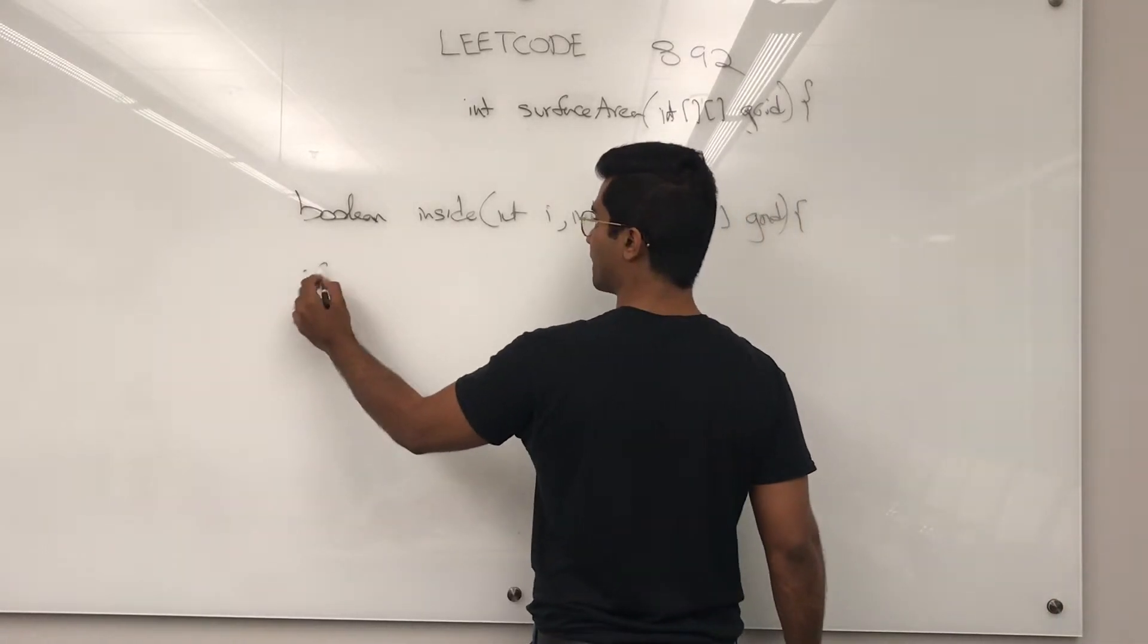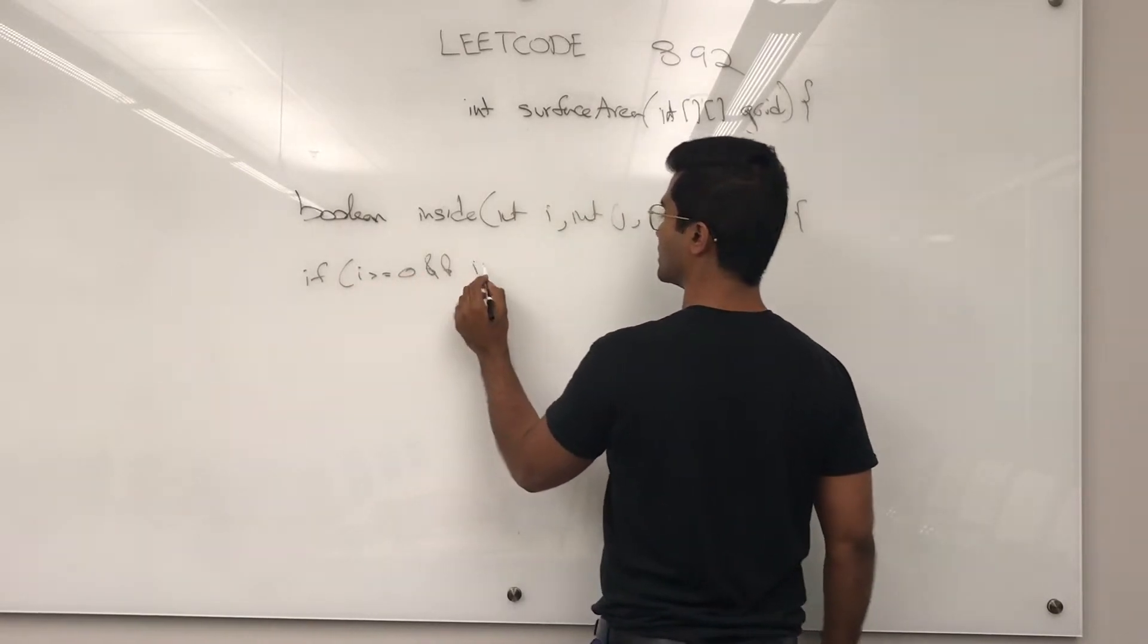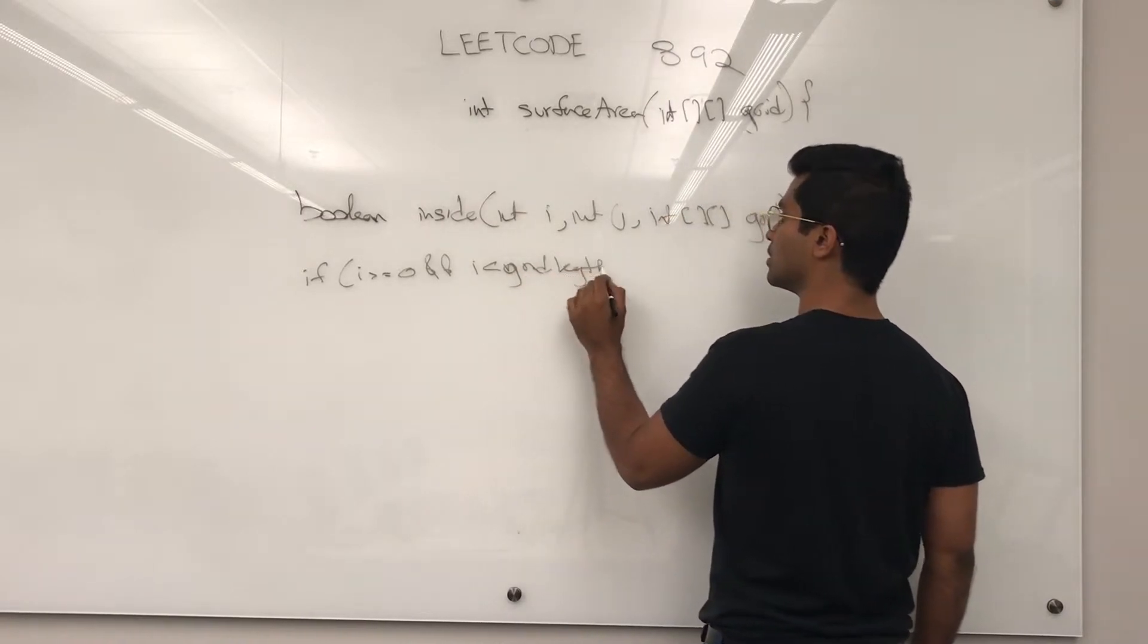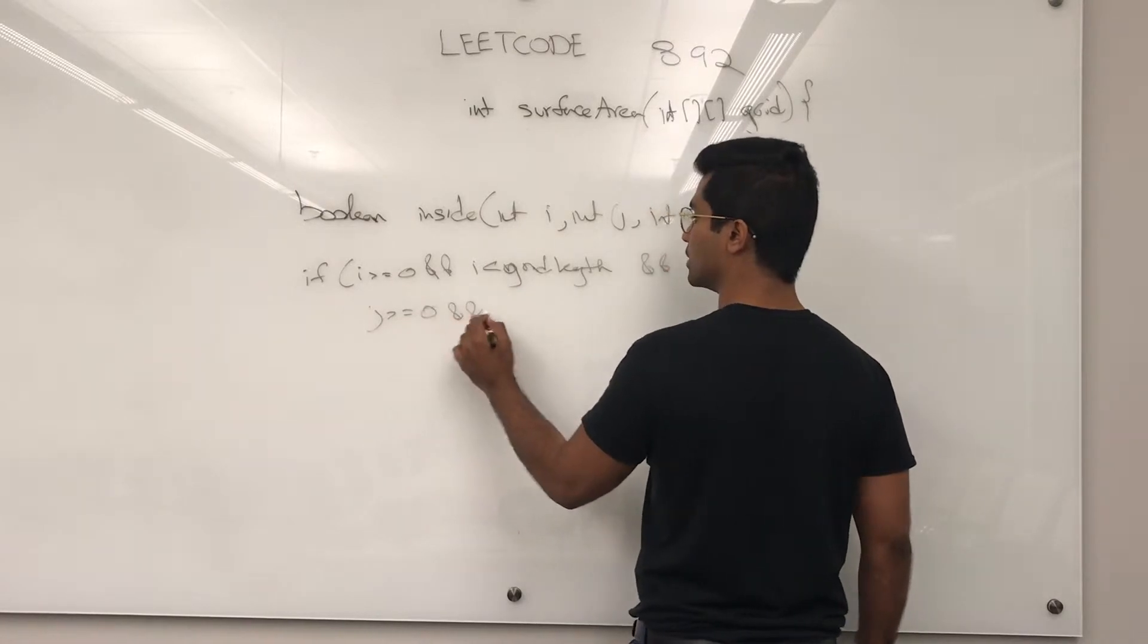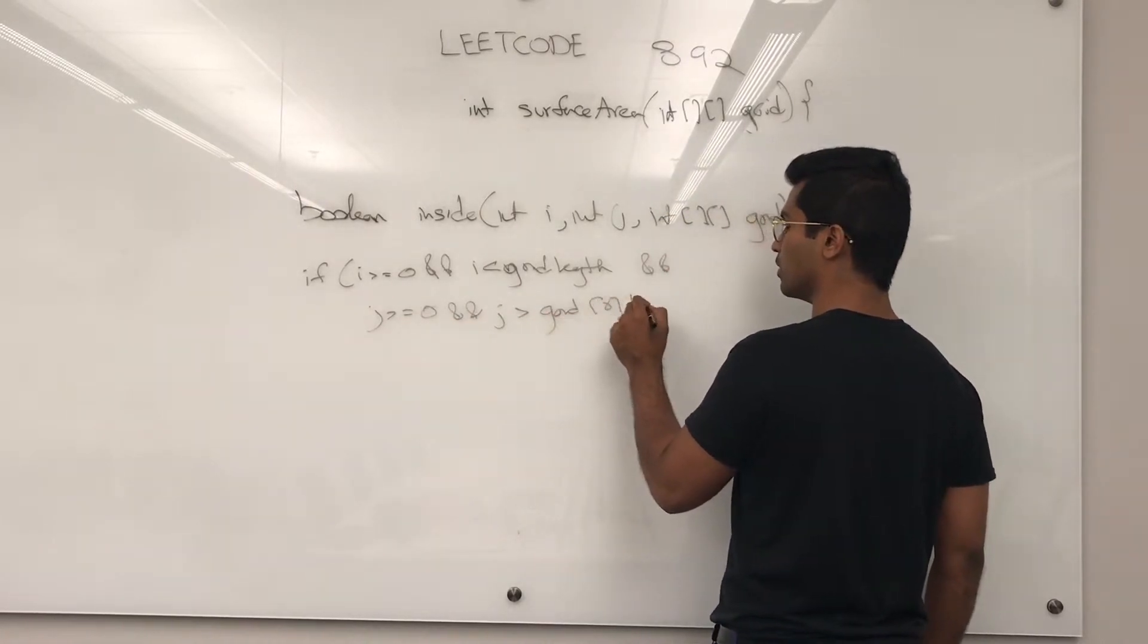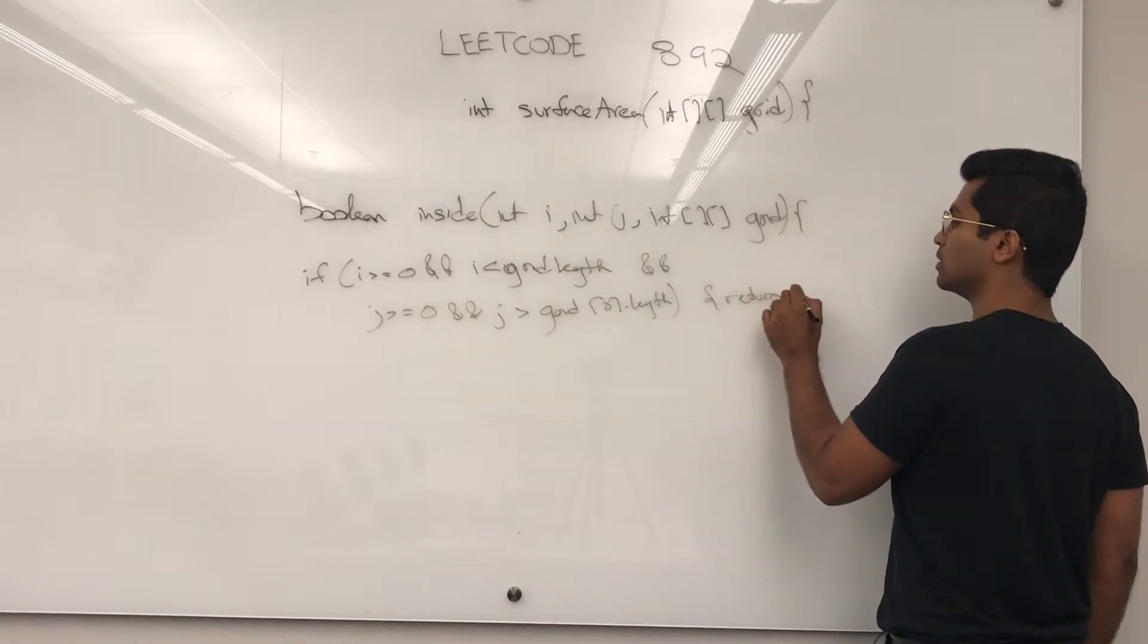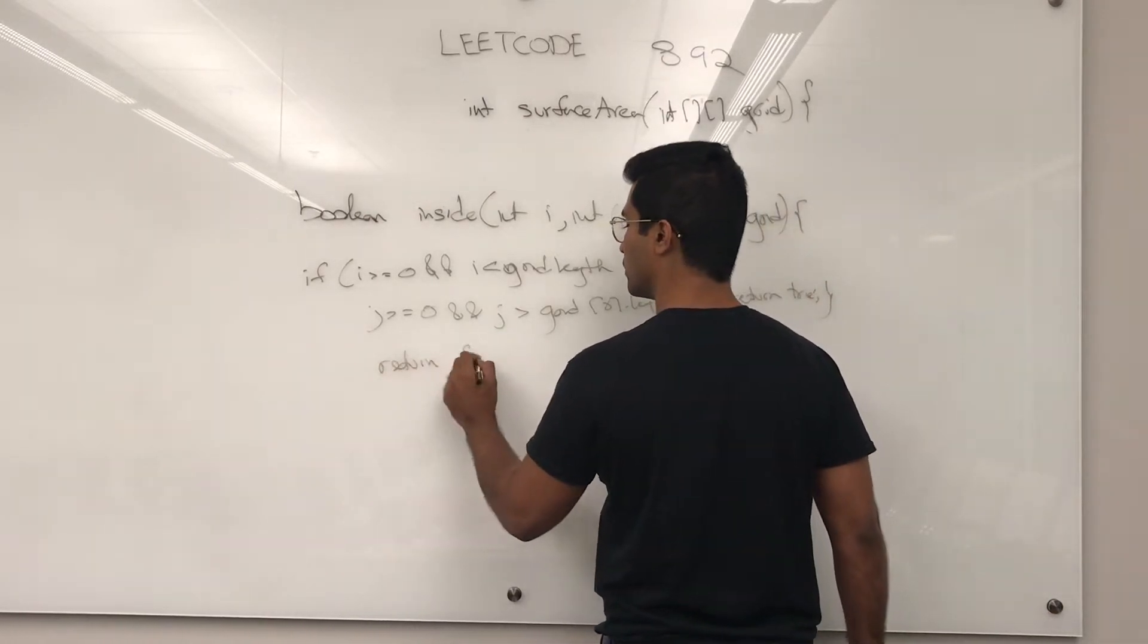And then if i is greater than or equal to 0, and i is less than grid.length, and j is greater than or equal to 0, and j is less than grid[0].length. Then we return true. Else we return false.